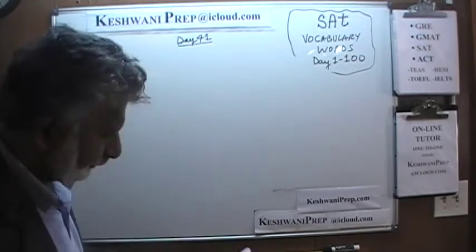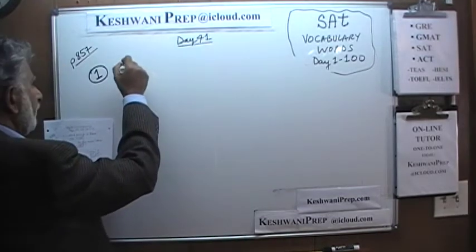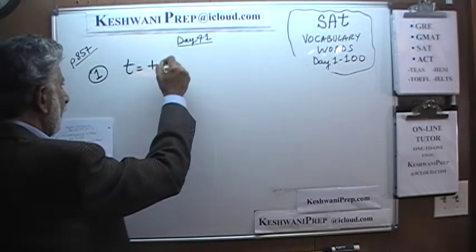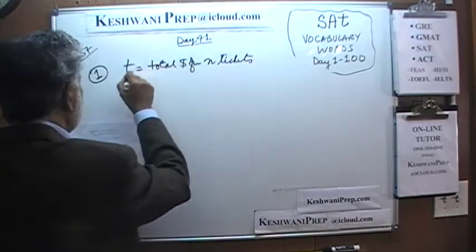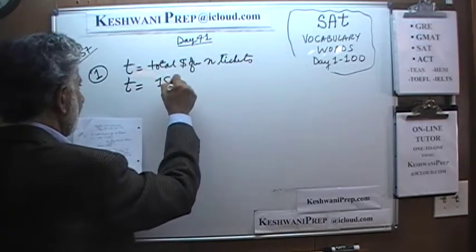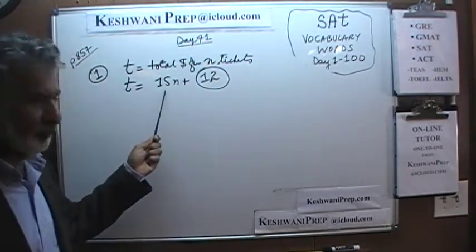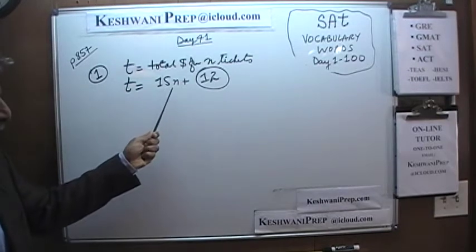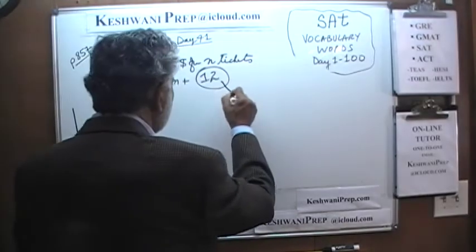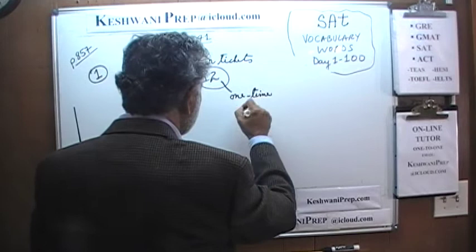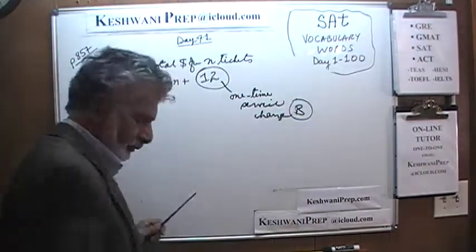Let's take a look at number one. As you know, the first few questions are going to be very straightforward. We are told that t is the total amount of money paid for n tickets, and that t equals 15 times n plus 12. The question is what does this 12 represent? Well, 15 represents the price per ticket. The 12 is what they're calling the one-time service charge. The answer is B.